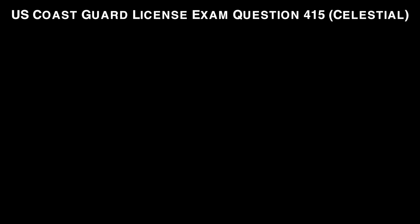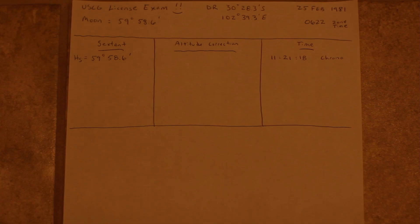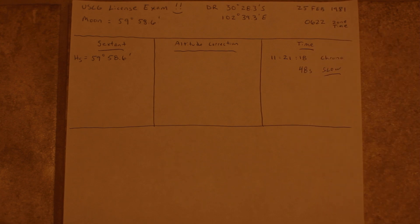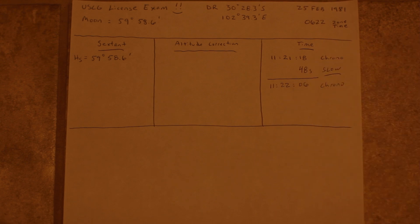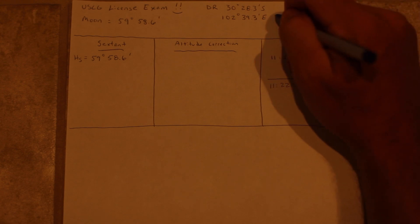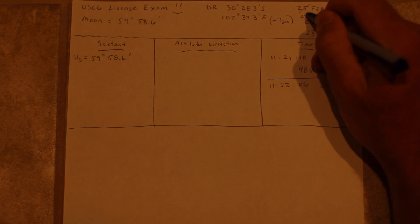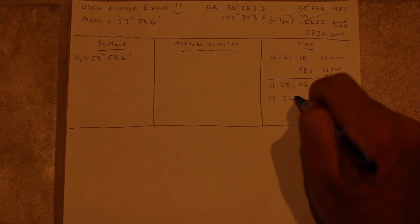Let's work an example from the U.S. Coast Guard license exam for celestial navigation — it's the most complex example we'll work in this series. We're looking for the azimuth and intercept of a sight of the moon. Once we correct the chronometer for a 48-second slow error, we note the time of 11 hours, 22 minutes, and 6 seconds. However, we shot this at 0622 zone time, and given our longitude, that means it's 2322 GMT. The trick here is that chronometers work on a 12-hour cycle, not 24. So the actual time is 2322:06 on 24 February, not 25. The Coast Guard's always trying to trick you.